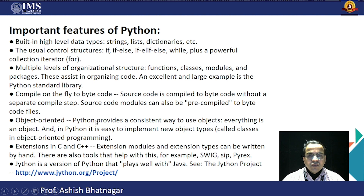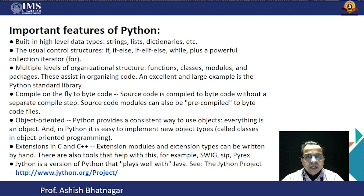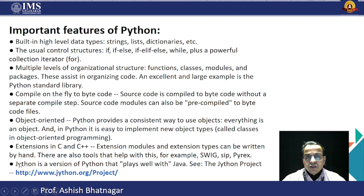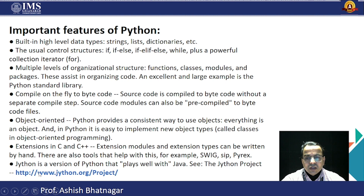Python provides a very strong object-oriented concept, making it easy to implement new object types like classes. Python can also be extended in C and C++, which represents its integration properties. Additionally, if you want to use Python with Java, there is Jython — a version of Python that works well with Java — and you can find that project and use Java code with Python.